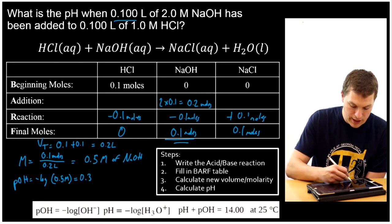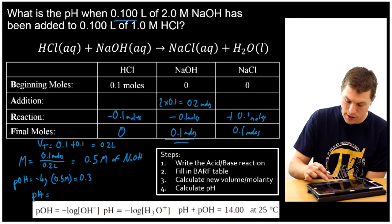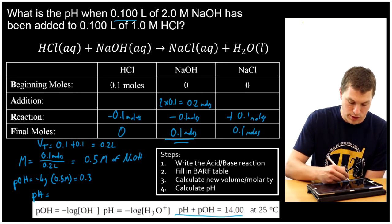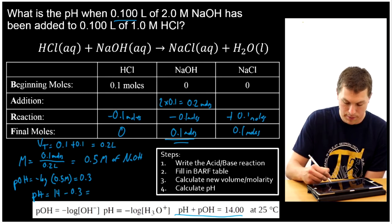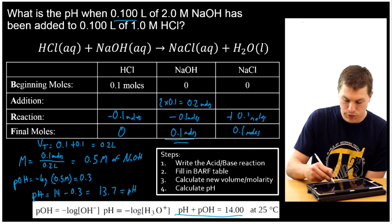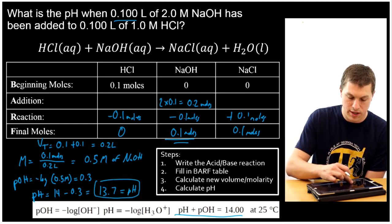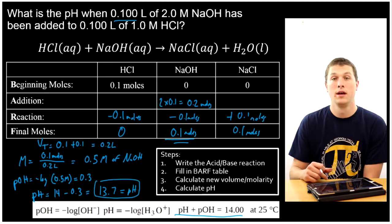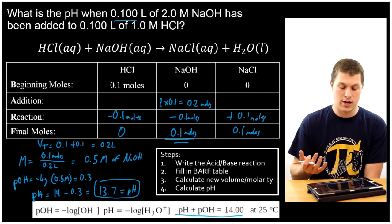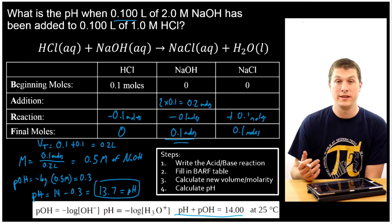Using pH plus pOH equals 14, I get pH equals 14 minus 0.3, so pH equals 13.7. Think about what's happened: I started with an acidic pH, I got to an equivalence point where my pH was neutral at 7, then I continued to add sodium hydroxide and reached a basic pH of 13.7.